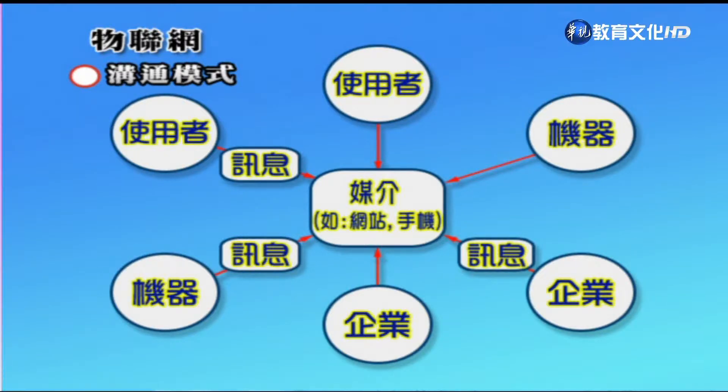我們現在要講的物聯網，就是M2M，機器對機器。舉個例子，像我們剛剛講到國道電子收費，你車子開過去是一台機器，你經過那個閘道口，它也是一個機器，就是機器對機器。